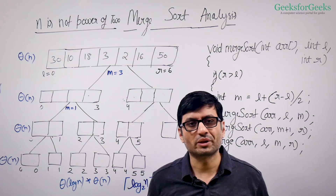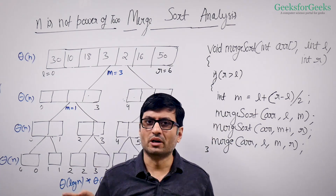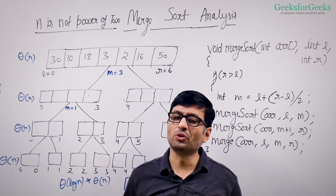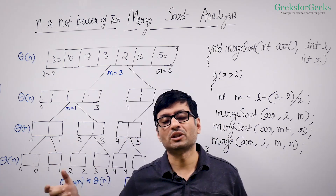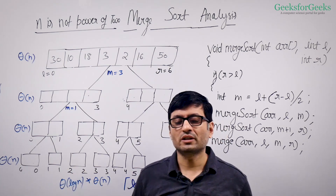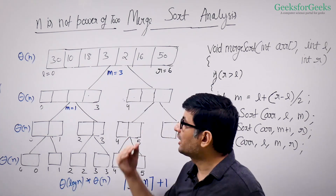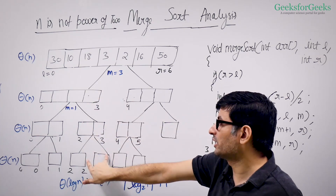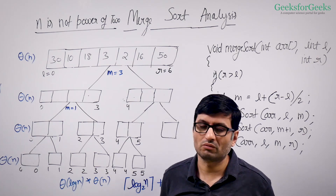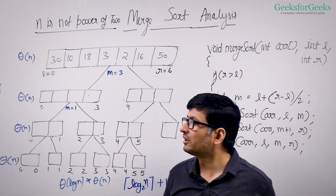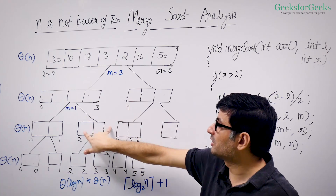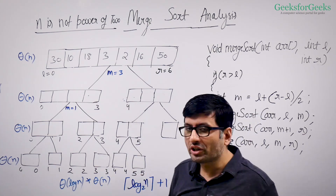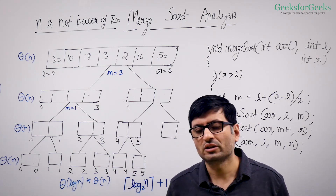Let us now analyze the auxiliary space requirements. For that, we need to look at the merge function. The merge function needs theta(N) auxiliary space — it copies the left half into a left array, the right half into a right array, and then merges them. So the merge function has a theta(N) space requirement. You might wonder: if there is theta(N) space at every level, why isn't the auxiliary space theta(N log N)? Why is it theta(N)? Think about this for a moment.